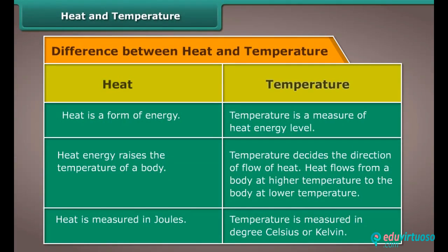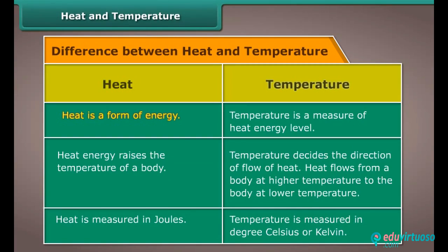The following shows the difference between heat and temperature. Heat is a form of energy; temperature is a measure of heat energy level. Heat energy raises the temperature of a body, while temperature decides the direction of flow of heat. Heat flows from a body at higher temperature to the body at lower temperature. Heat is measured in joules; temperature is measured in degrees Celsius or Kelvin.